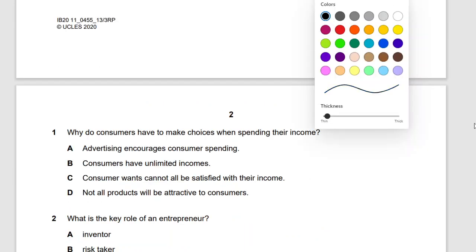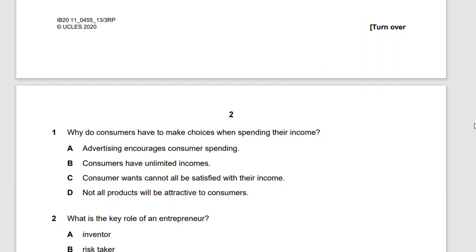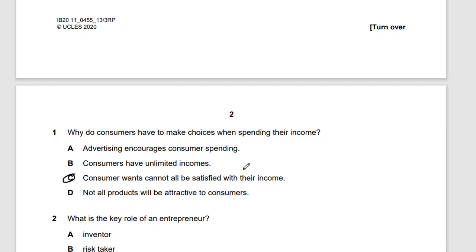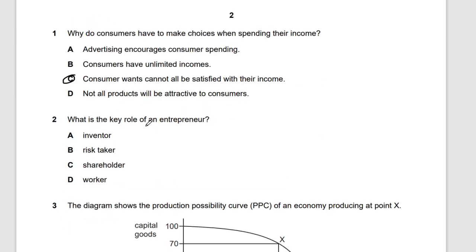Question one: why do consumers have to make choices when spending their income? The answer is C — consumers' wants cannot all be satisfied with their income, so they therefore have to choose wisely.